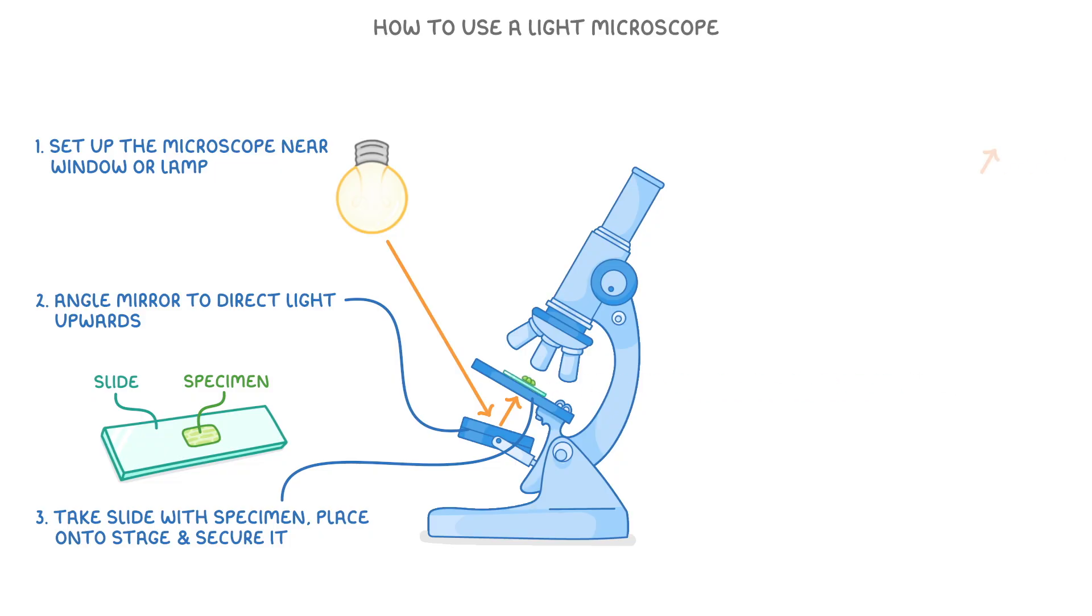And now that our slide is in place, we can look through the eyepiece lens and adjust the focus. So first we turn the coarse focus knob to get a rough image.